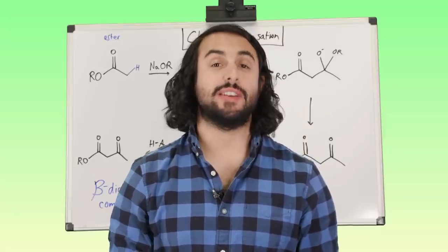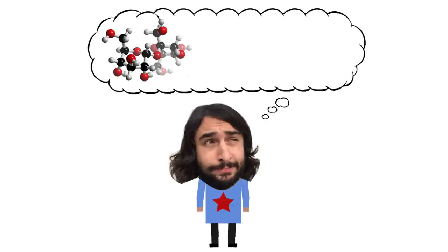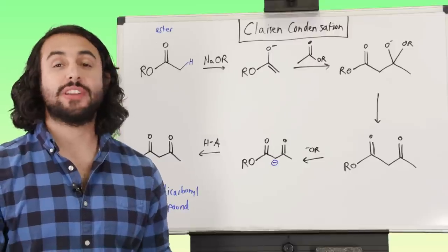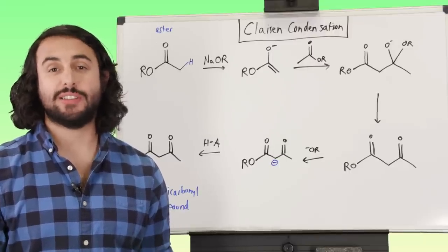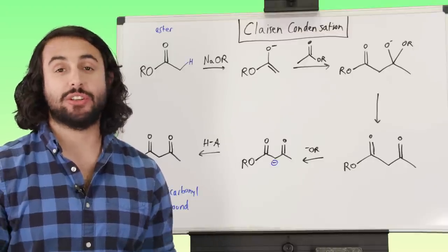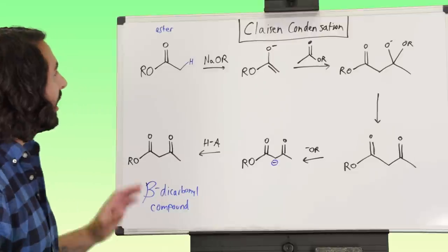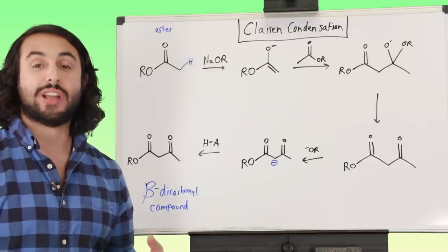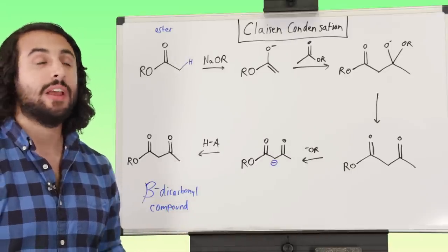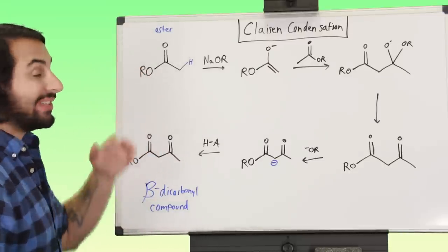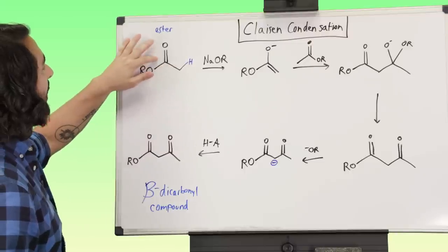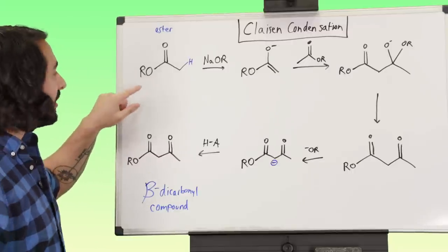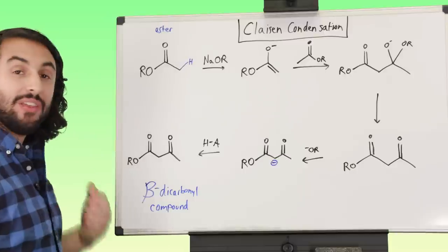Professor Dave here. Let's talk about Claisen condensation. We've learned a few things about enolate chemistry — we learned about aldol condensation, and now it's time to learn a similar reaction called Claisen condensation. The key thing to recognize right off the bat is that whereas aldol condensation operates on aldehyde or ketone substrates, here we are working with an ester substrate. An ester group is a carbonyl connected to OR — if it were OH it would be a carboxylic acid, but OR meaning O and then an alkyl group makes it an ester.